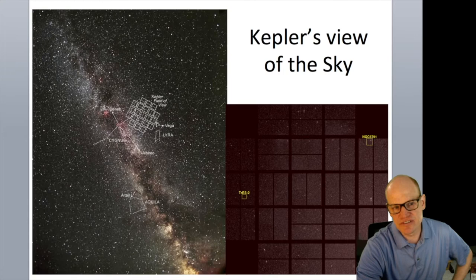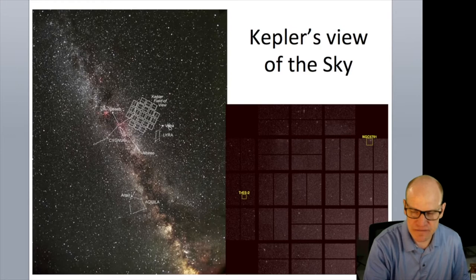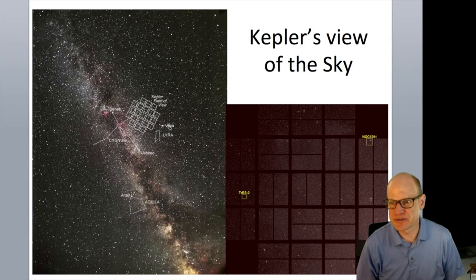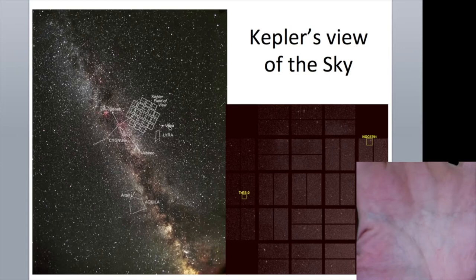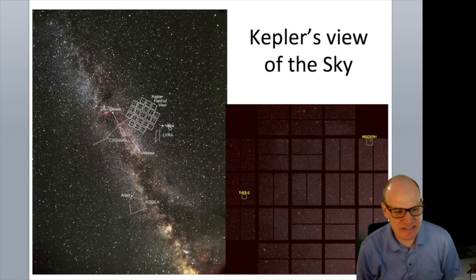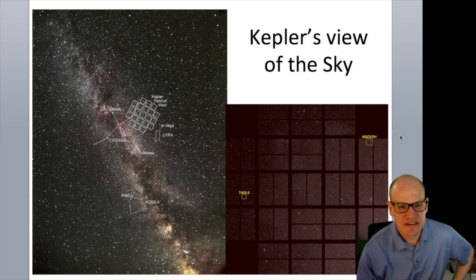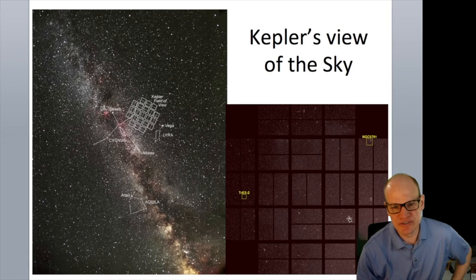The Kepler field of view is visible in summer and is 10 degrees on a side — enormous for a telescope. Even large ground-based wide-field telescopes are around three degrees on a side. That's why the field is positioned above the galactic plane as it is, optimizing for the right density of suitable target stars.